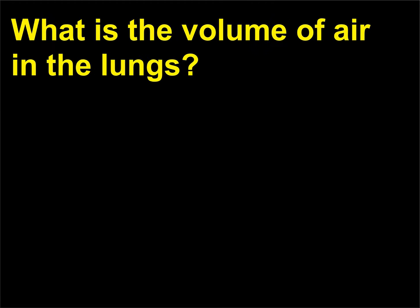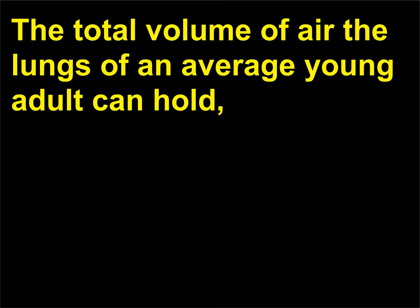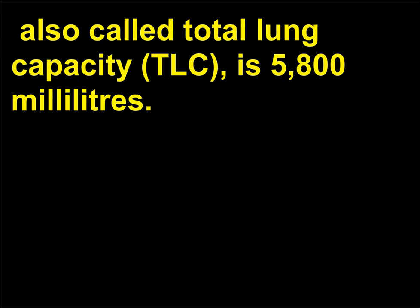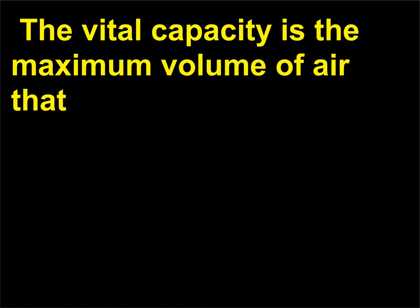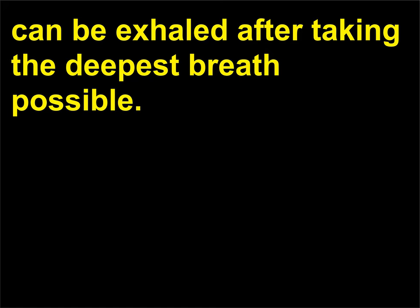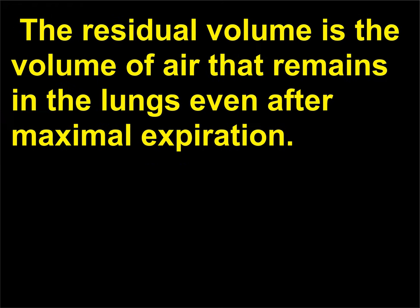What is the volume of air in the lungs? The total volume of air the lungs of an average young adult can hold — also called total lung capacity (TLC) — is 5800 milliliters. This is the combination of the vital capacity (VC), 4600 milliliters, and the residual volume (RV), 1200 milliliters. The vital capacity is the maximum volume of air that can be exhaled after taking the deepest breath possible. The residual volume is the volume of air that remains in the lungs even after maximal expiration.